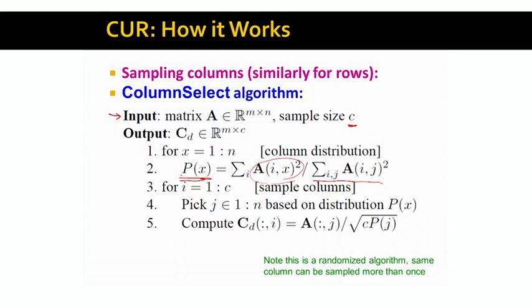And this now defines us a probability distribution, where long columns, columns where the sum of the squared errors is big, will have a higher P(x). And then columns where the sum of squared values is small, they will also have small P(x). So we basically compute a probability distribution over the columns.